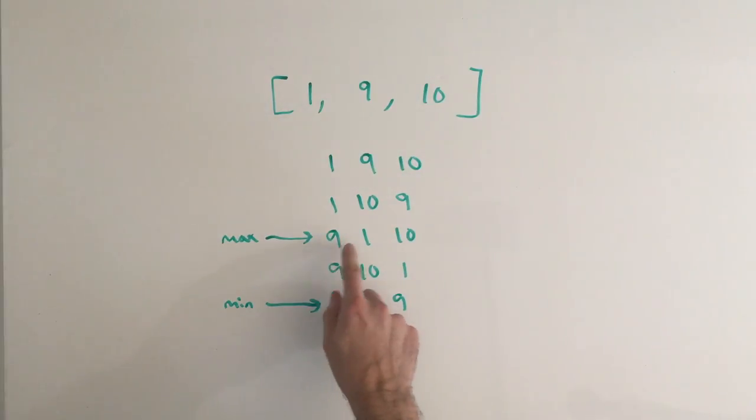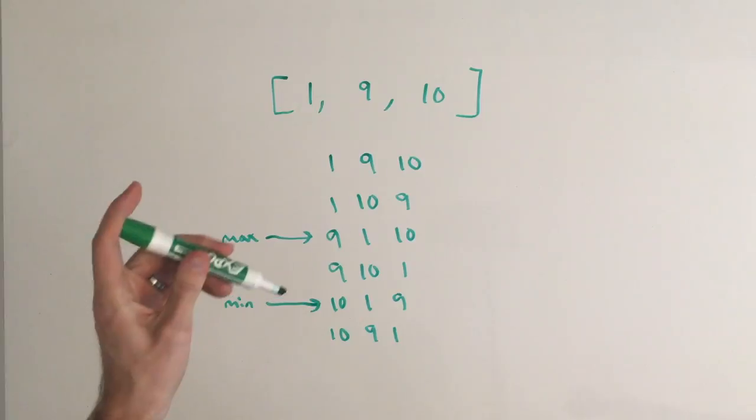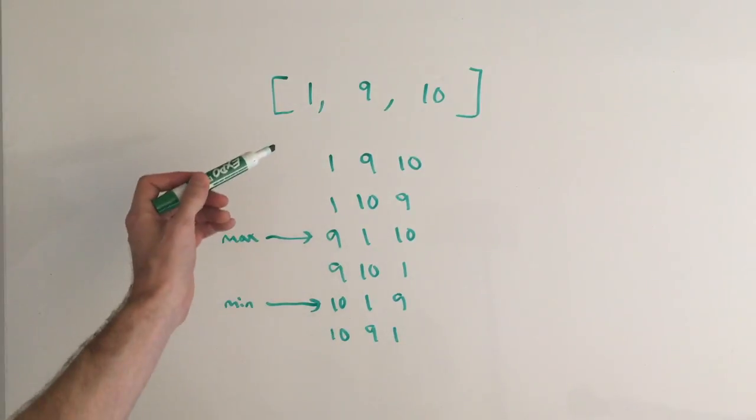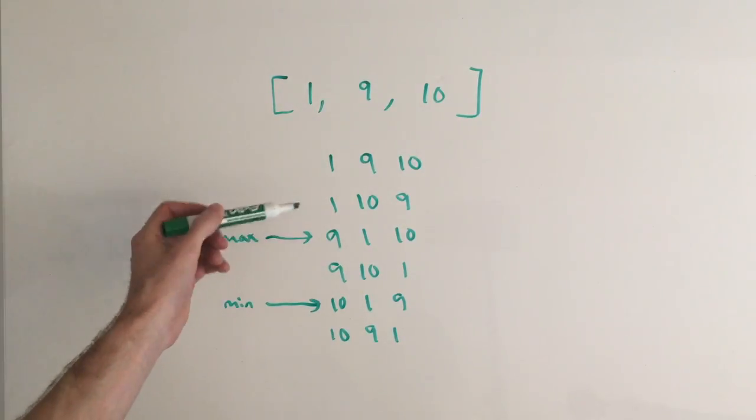So if you notice 9, 1, 10 is our max and the opposite is actually just the reverse. So 10, 1, 9 which is 1019 down here. So we've made an interesting observation about this problem: the max is just the reverse of the min.